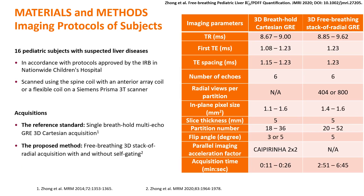Sixteen pediatric subjects were scanned on the Siemens 3T scanner at Nationwide Children's. Whenever possible, the pediatric subjects were instructed to hold their breath, and the reference single breath-hold multi-echo GRE 3D Cartesian acquisition was performed. Next, a free-breathing 3D stack-of-radials acquisition was performed and reconstructed without and with self-gating.